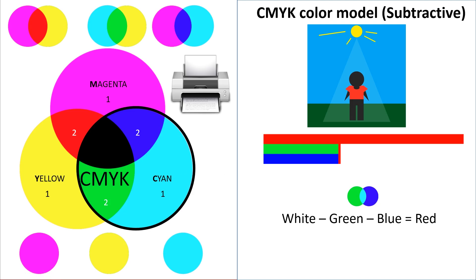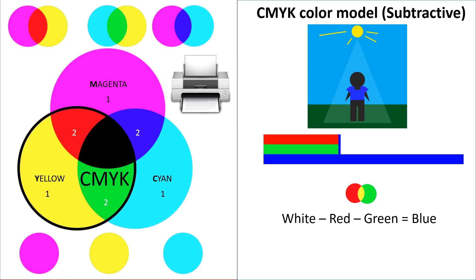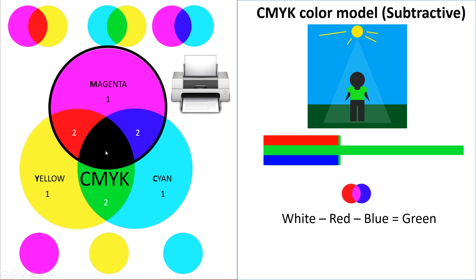Now, let's look at our blue shirt example. Here, blue subtracts red and green, as well as yellow, which is made by combining red and green. Same deal for green, subtracting red, blue, and finally magenta.